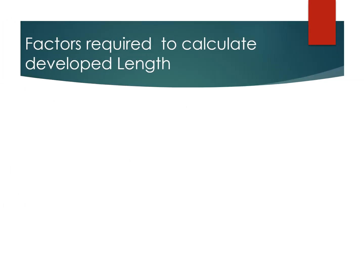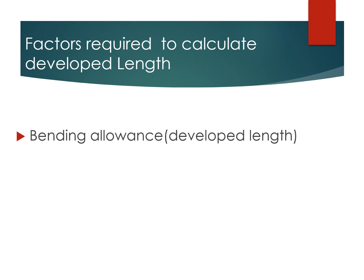The first key concept is bending allowance, which is referred to as BA. The second is the Y factor — we will talk about how to calculate that. And then we will talk about the K factor.